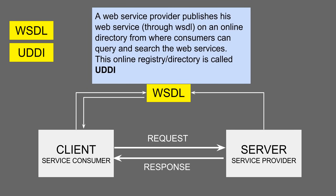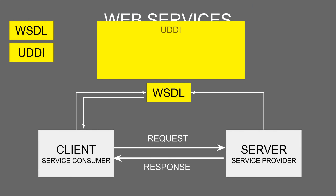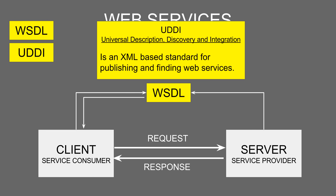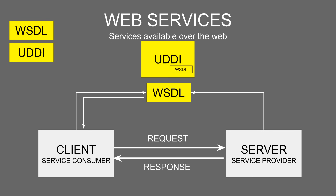To enable discovery, all web service providers publish their WSDL to an online registry or directory which can be searched by any consumer to get hold of the WSDL. This online directory or registry is called UDDI, which stands for Universal Description, Discovery and Integration. It is an online directory where a service provider can publish his WSDL and a consumer can query it to get the WSDL. Once the consumer has the WSDL, they can make use of the web services.